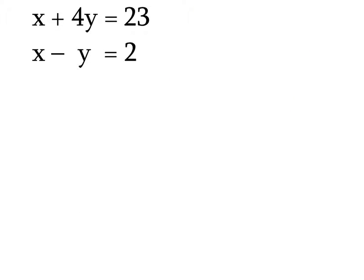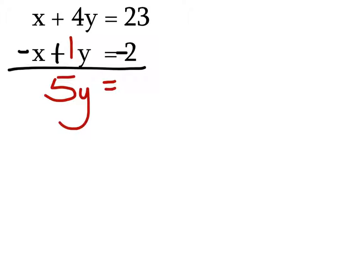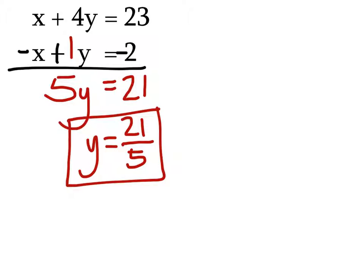On this one, we need to eliminate — which one would we eliminate? The X's. The problem is they don't have opposite signs, so change the signs. Let's make that a negative X — that's plus now, and that's negative. What's X minus X? Zero. Four Y plus one Y — that's a phantom one — is five Y. Twenty-three minus two is twenty-one. This is going to give us a fraction, which is fine. Y equals 21 divided by the coefficient 5 — Y equals 21 fifths.